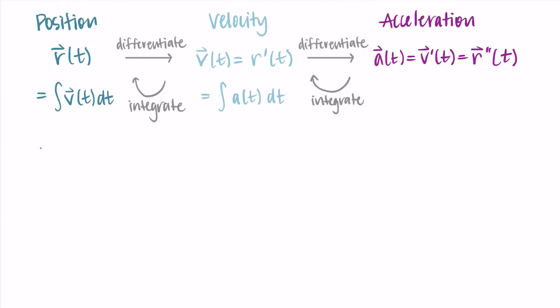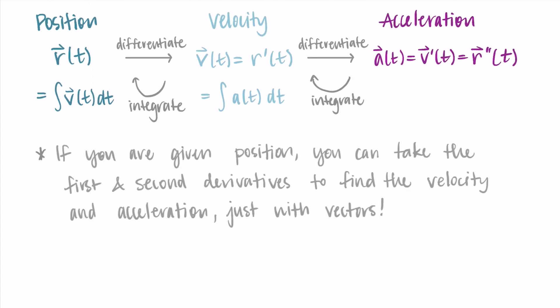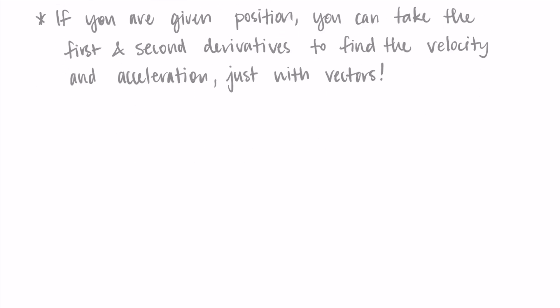So for example, if you are given position, you can just take the first and second derivatives to find the velocity and acceleration. It'll just be vectors this time around, since we're using vector valued functions.